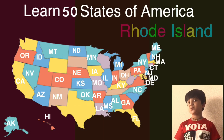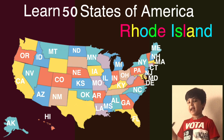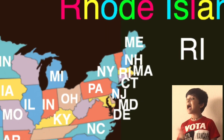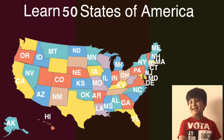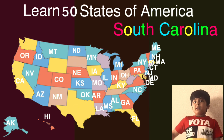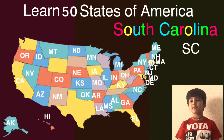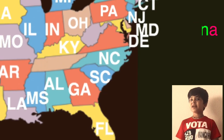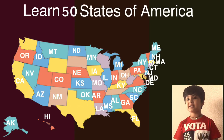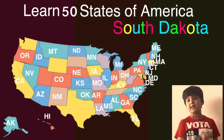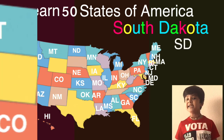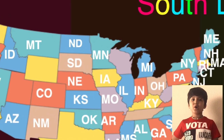The next one is Rhode Island and the short one is RI. Here comes Rhode Island on the map, can you guess what will come next? The next one is South Carolina and the short one is SC. Here comes South Carolina on the map, can you guess what will come next? The next one is South Dakota and the short one is SD. Here comes South Dakota on the map, can you guess what will come next?